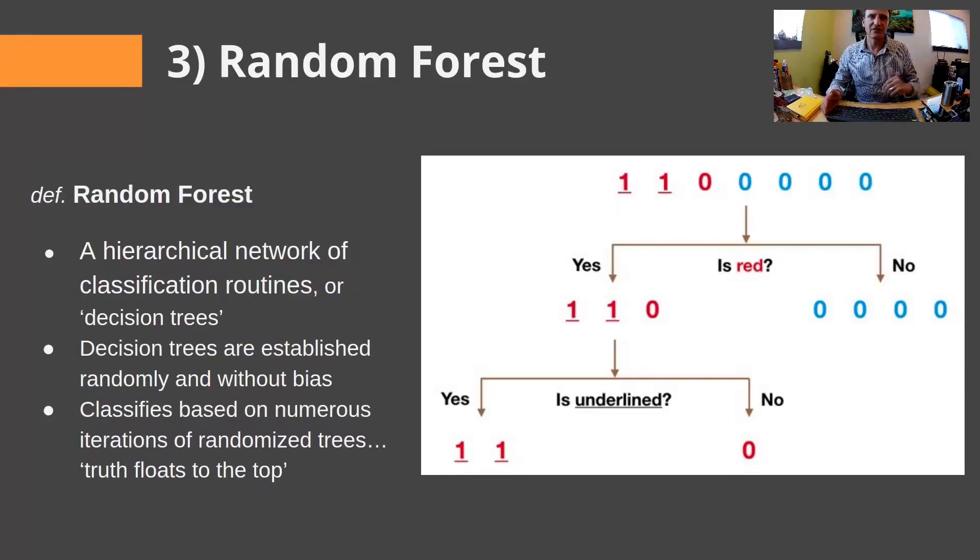So, if we turn left, and then you turn right, and then you turn left, dead end. So, then you go back to the beginning, turn left, turn right, turn right. Decision trees are established in the random forest model completely randomly and without bias, and then tested, and then again, and again, and again. Random forest model will classify based on numerous iteration, so that if you do it enough, the truth will eventually float to the top in the random forest model.